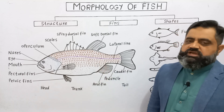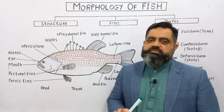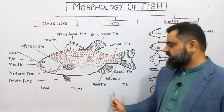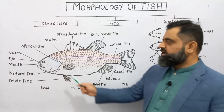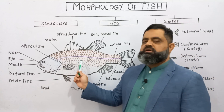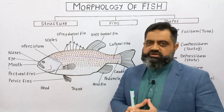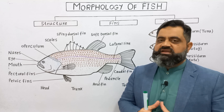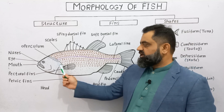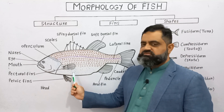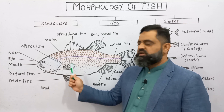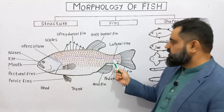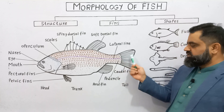The body of the fish can be divided into three main parts: head, trunk, and tail. Although head and trunk cannot easily be differentiated because these fishes do not have a neck. When we look at the fish, the head is visible and the rest of the body is known as the trunk. At the posterior end there is a tail.